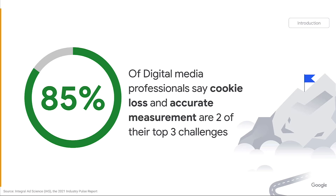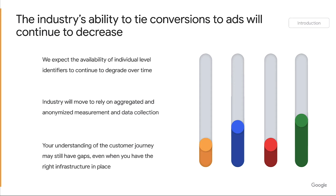The third challenge was cross-device attribution. Previously, we lived in a world of fully observable data, but this new ecosystem is dynamic and change is the new norm. If the availability of identifiers will degrade over time, the way we are using these identifiers must evolve as well. These changes are pushing the industry to aggregated and anonymized measurement and data collection. As the ceiling of observable ad-to-conversion linkages continually decreases, the reliance on conversion modeling to provide comprehensive measurement reporting will continue to increase.